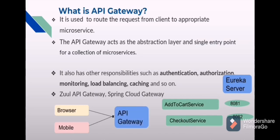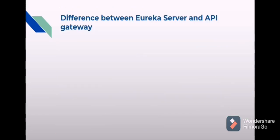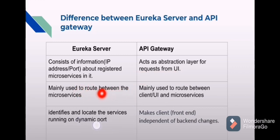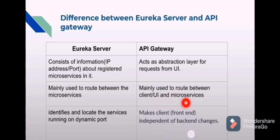In the API gateway we can do configurations so that when the client hits the application, the API gateway routes the request to the appropriate microservice. Some available API gateways are Zuul API gateway and Spring Cloud Gateway. The difference between Eureka server and API gateway: Eureka server consists of client information (IP address and port number) about registered microservices, whereas API gateway acts as the abstraction layer for requests from the UI. Eureka server is used to route between microservices, whereas API gateway routes between UI and microservices. Eureka server identifies services on dynamic ports, whereas API gateway makes the client (frontend) independent of backend changes.